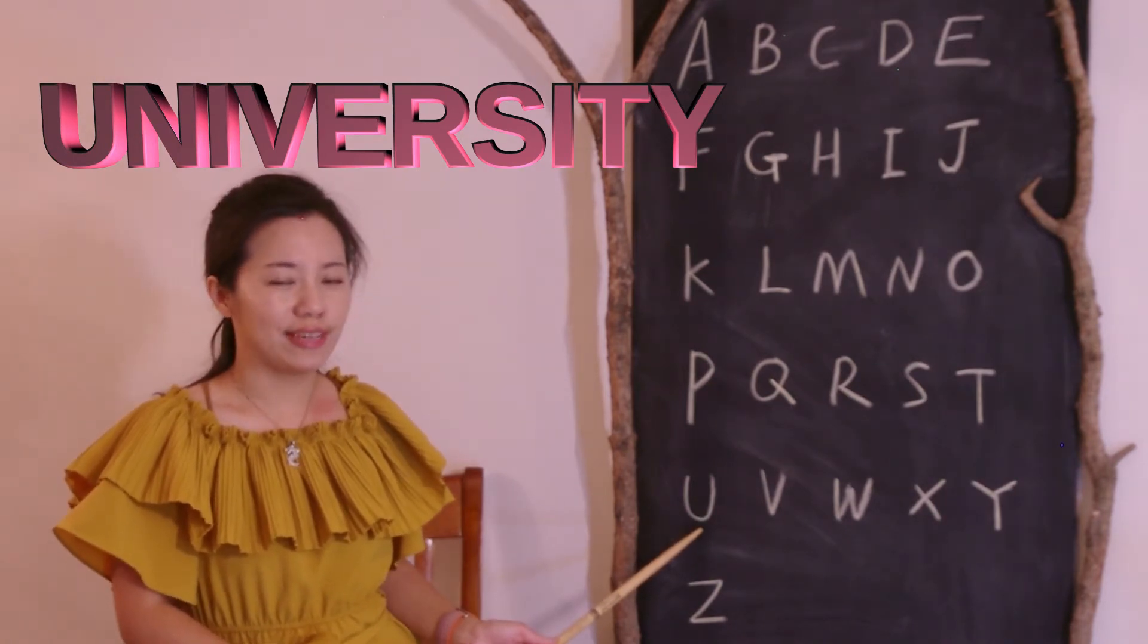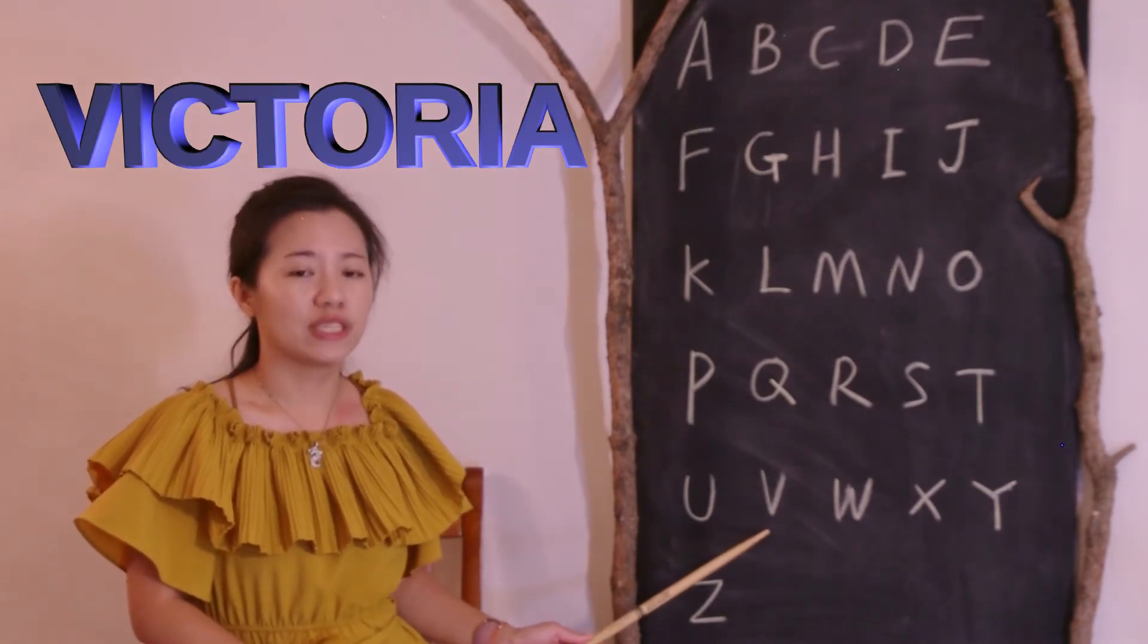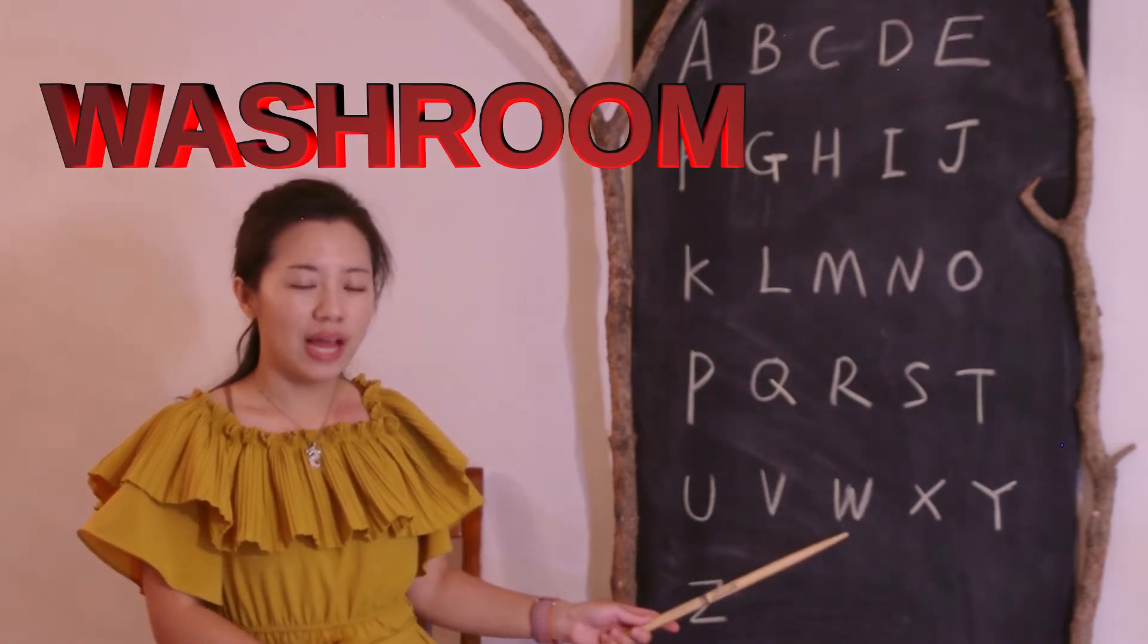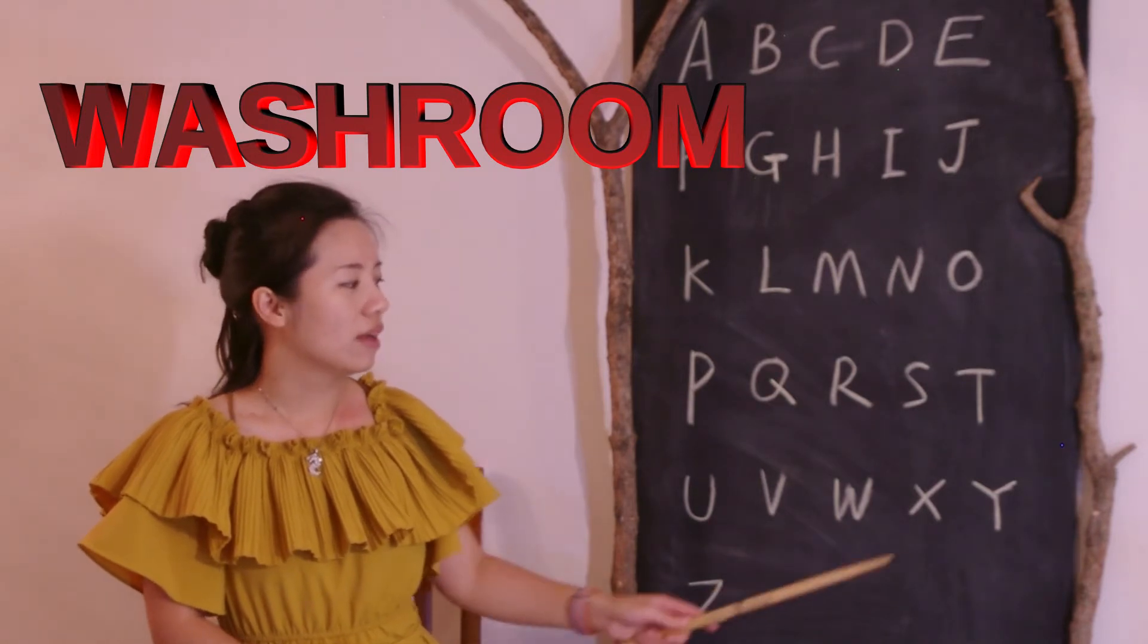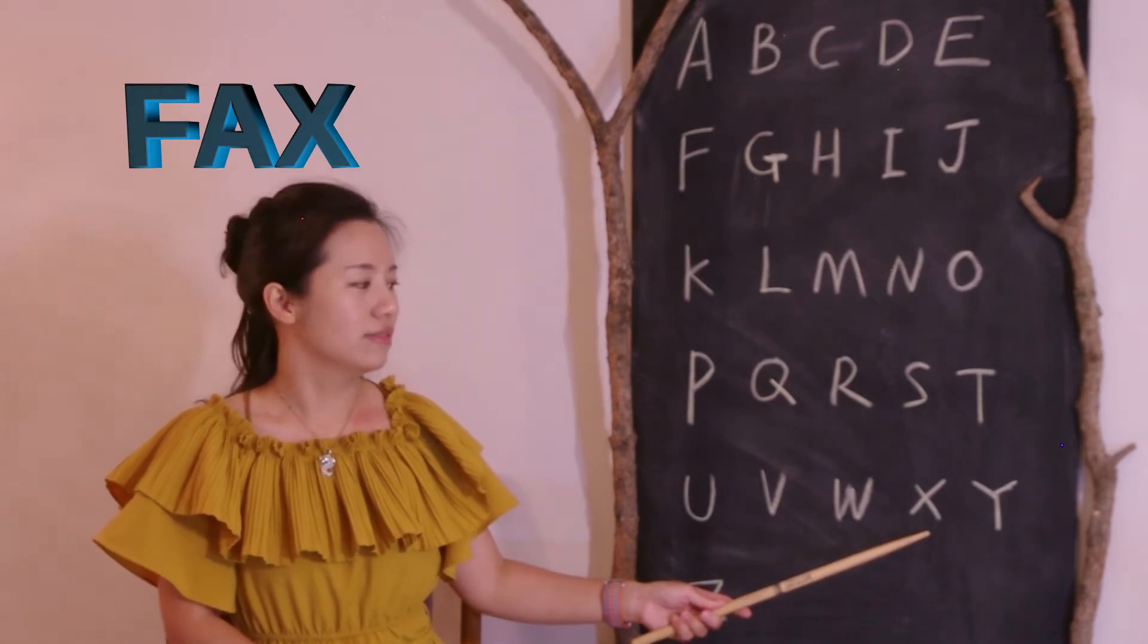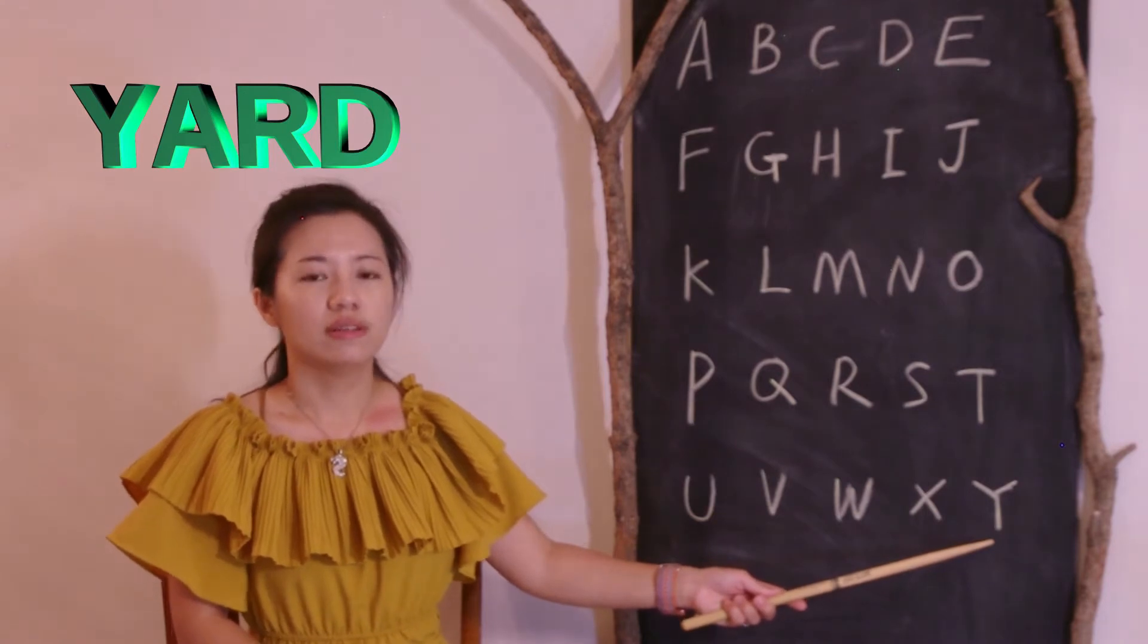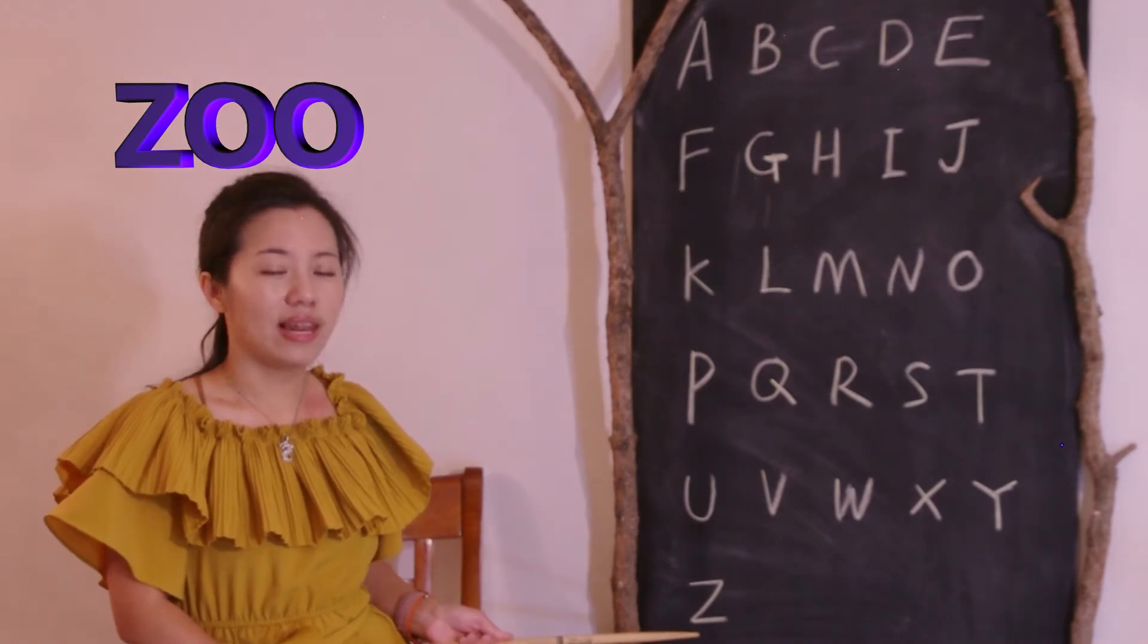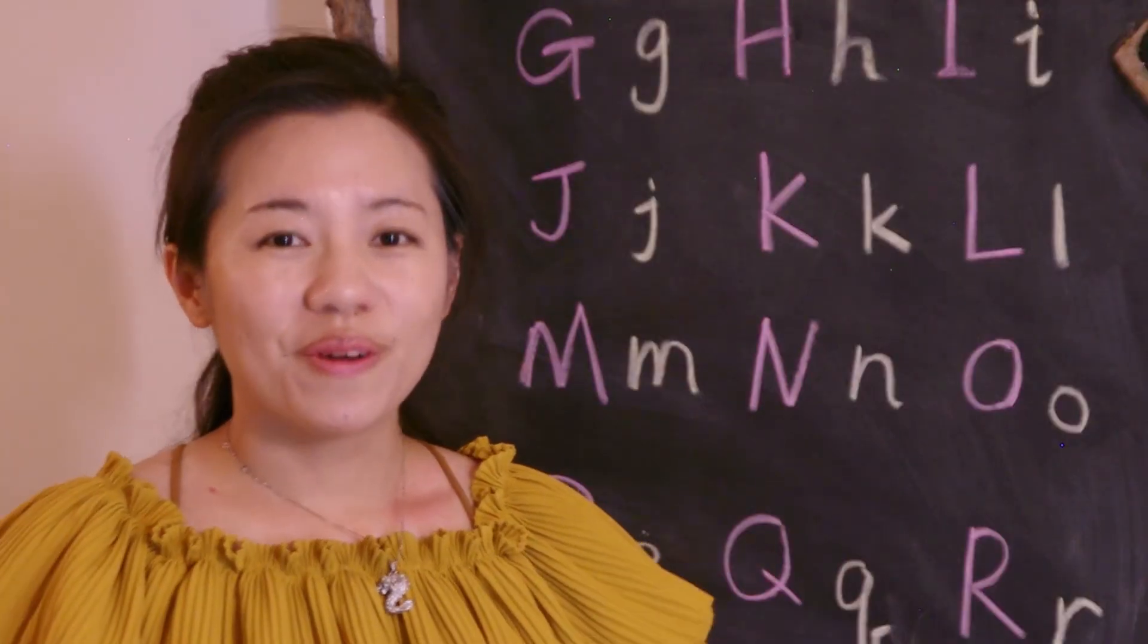U like university. V like Victoria. W like washer. X like fax. Y like yard. Z like zoo.